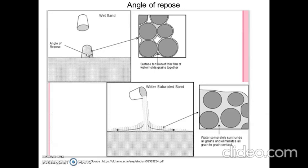When the wet sand is poured on a horizontal surface, we can see that due to the presence of water, a thin film is developed around the particles. The surface tension of this film of water holds the grain particles together. But if water is further added to the same sand, it becomes saturated and water completely surrounds all the grains, eliminating the grain-to-grain contact which was existing in the dry sand. Due to this, the sand will flow.